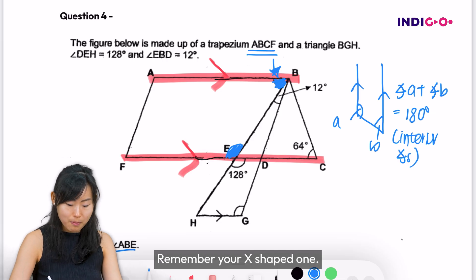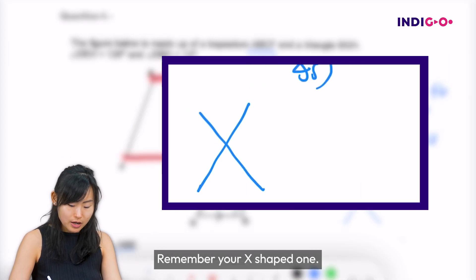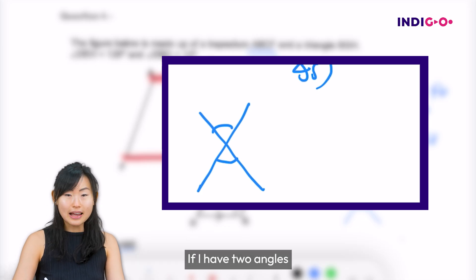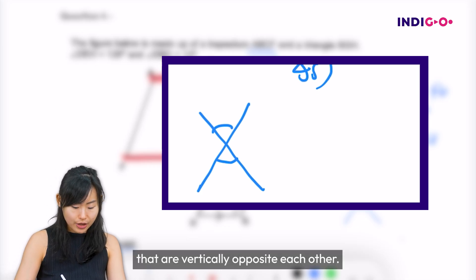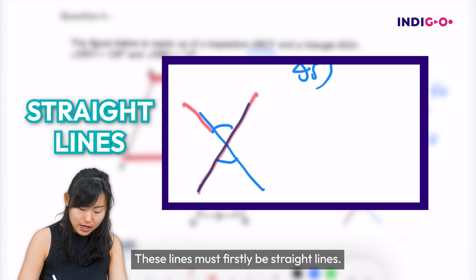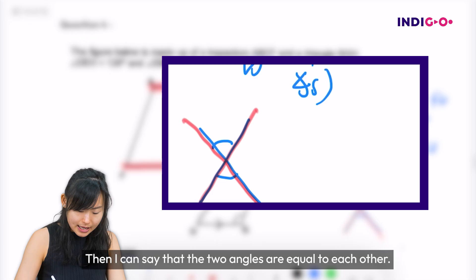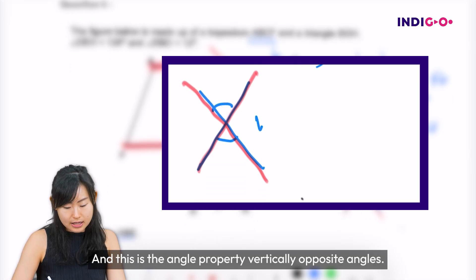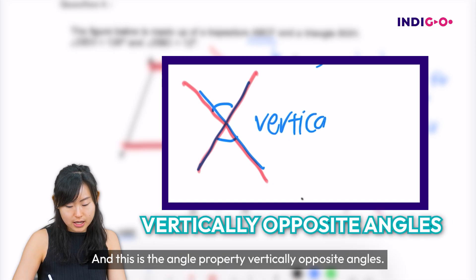There's this other property. Remember your X shape one? This is called vertically opposite angles. If I have two angles that are vertically opposite each other, take note, these lines must firstly be straight lines. Then I can say that the two angles are equal to each other. And this is the angle property vertically opposite angles.